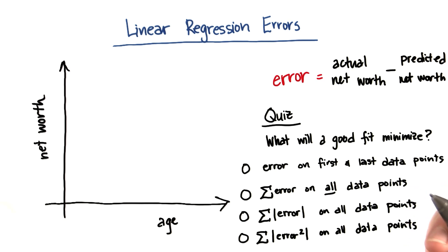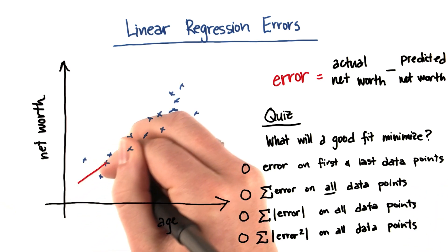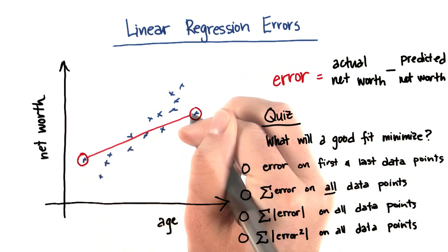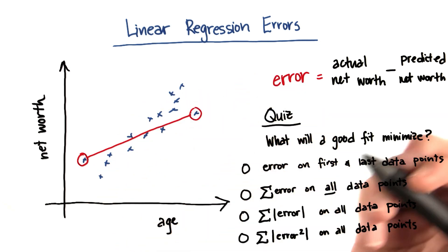But you could easily end up with something like this, where the trend of the data as a whole might look like this. But if you're only basing it on the first and last points, you would ignore all the data in between and come up with something that isn't fitting the pattern as a whole.